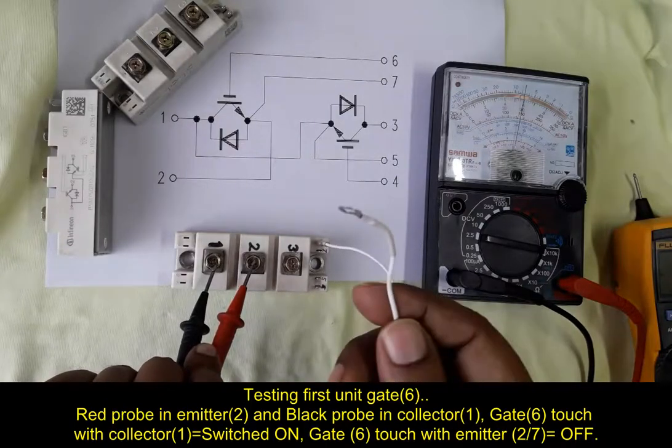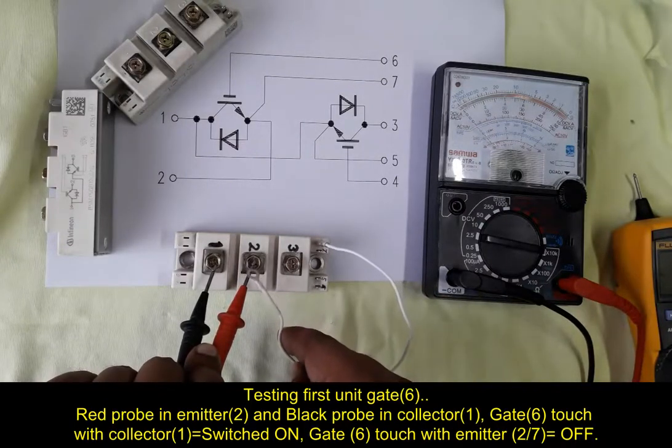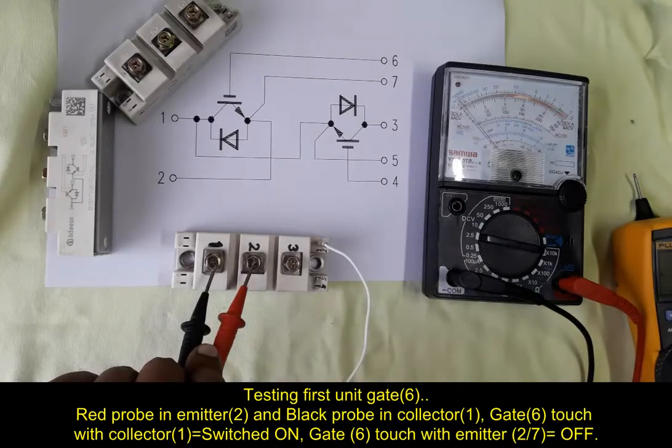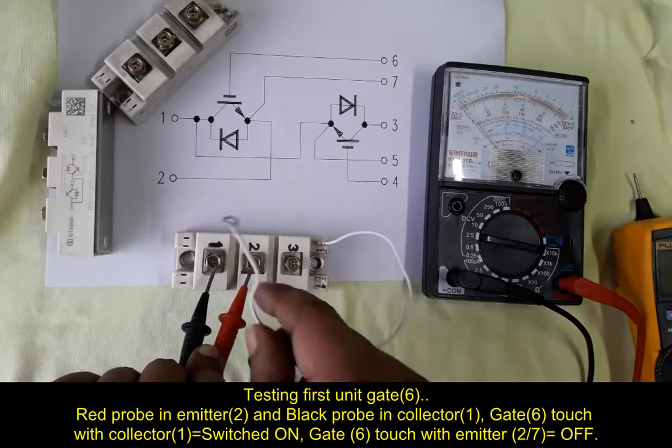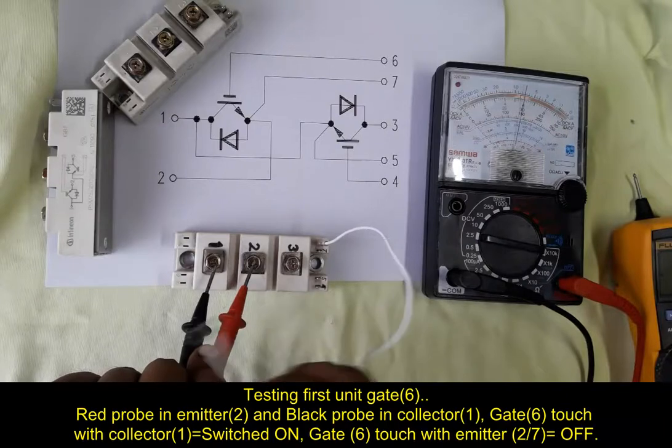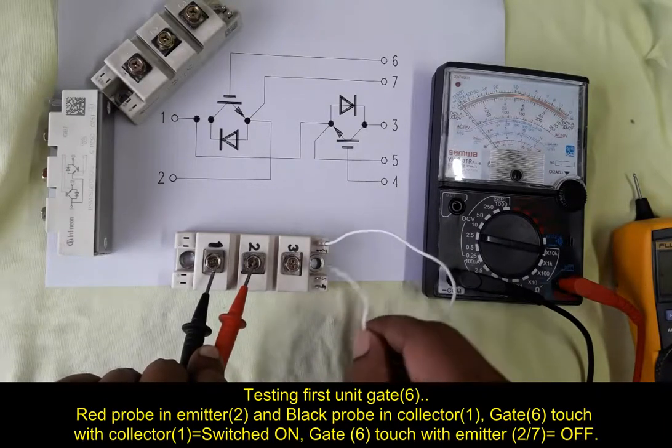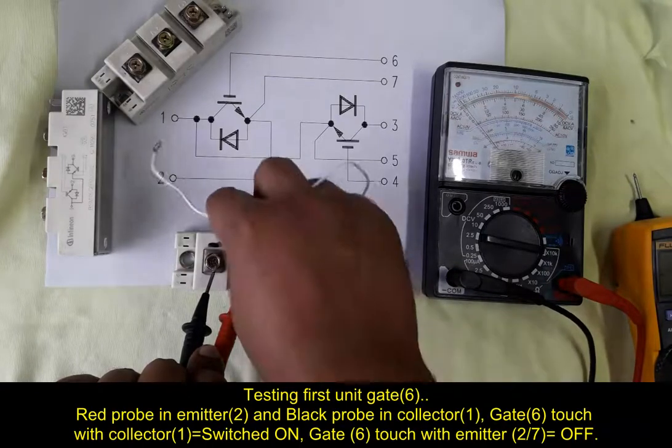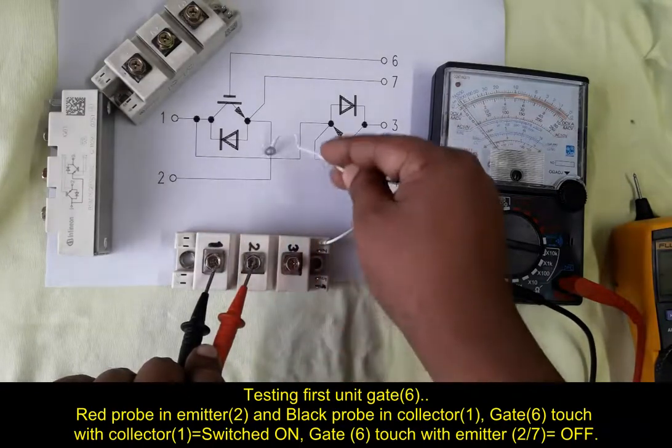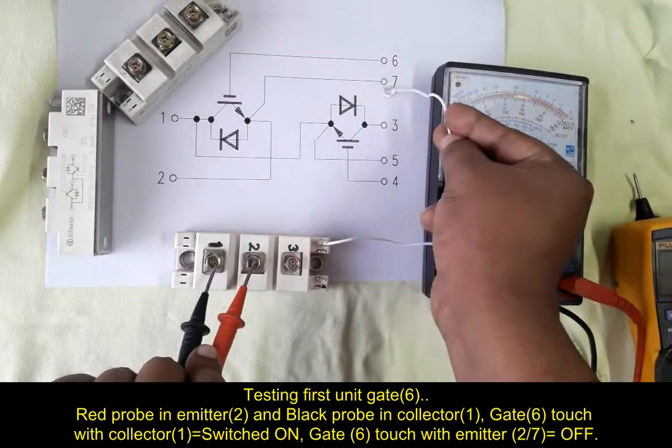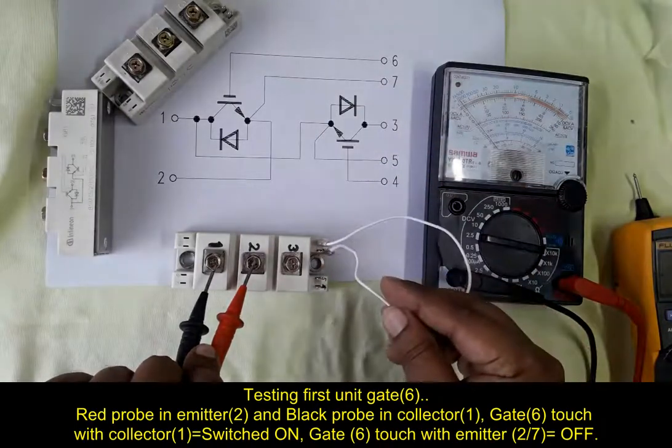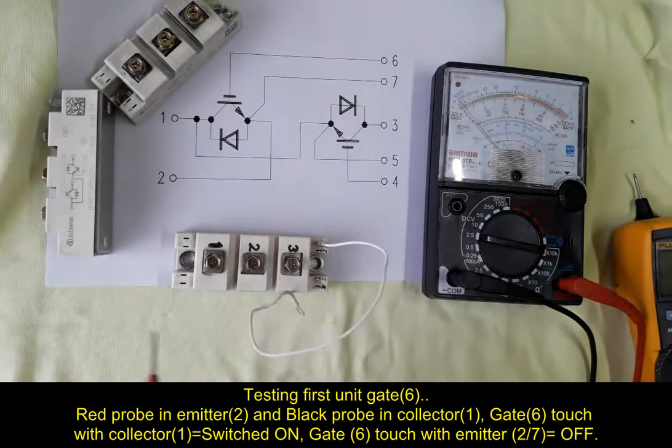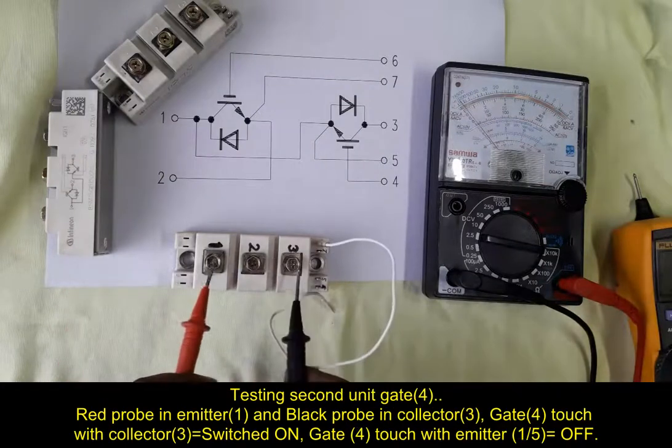So now touch terminal 2, that's the emitter, or terminal 7, it will turn off. Because terminal 2 and terminal 7 are the same, internally connected.